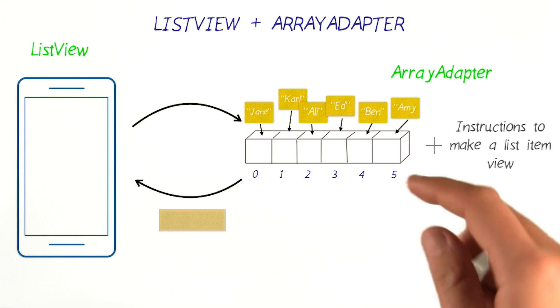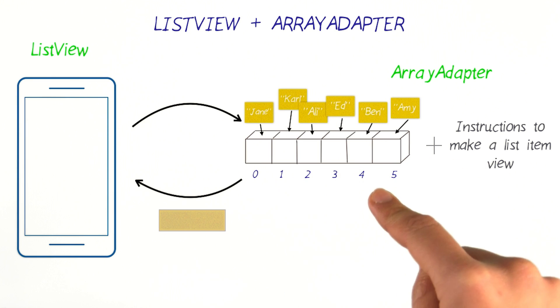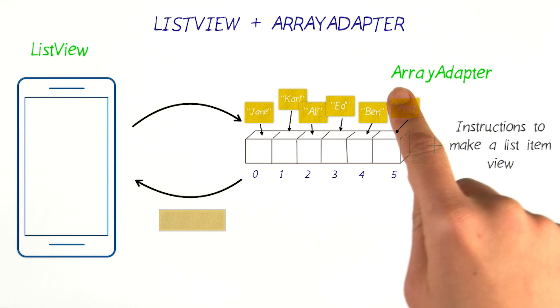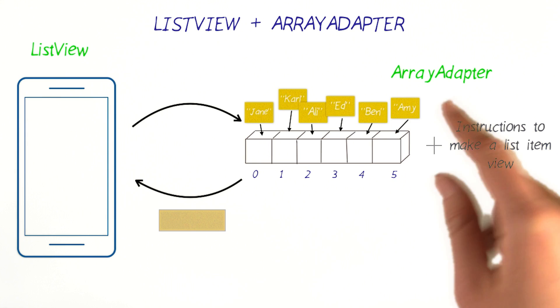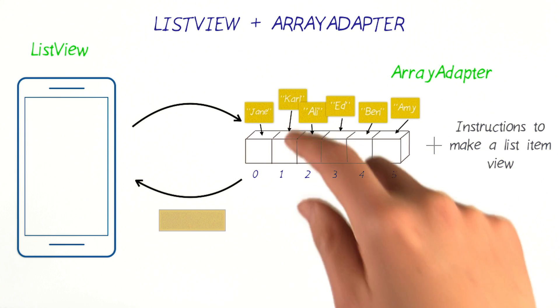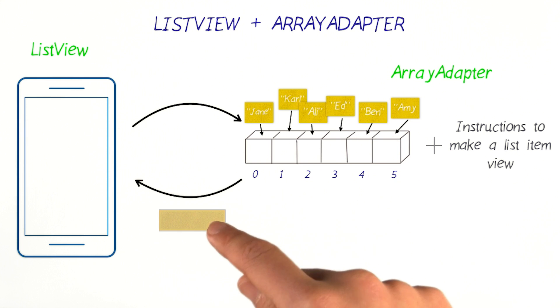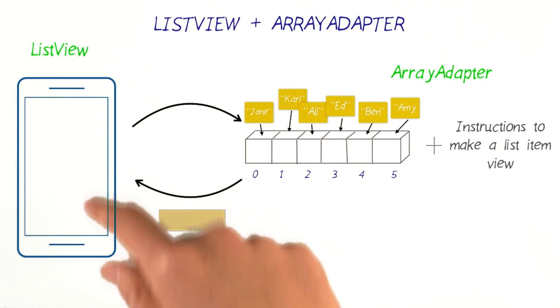For example, it can hold onto an array or even a list of data. The array adapter knows how to translate this data or adapt it into a list item view that will be displayed in the list view.